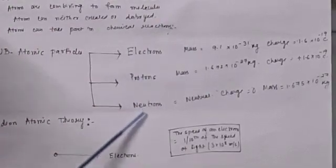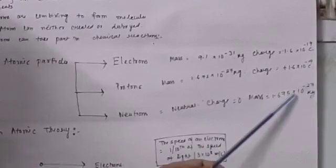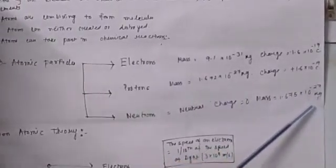Next subatomic particle is neutron. Neutron is neutral, that means charge is 0. It is neither positive nor negative. Mass is 1.675 into 10 to the power minus 27 kg.